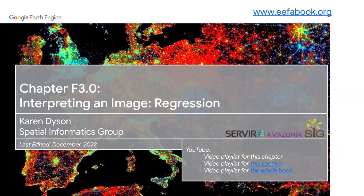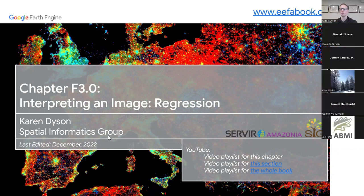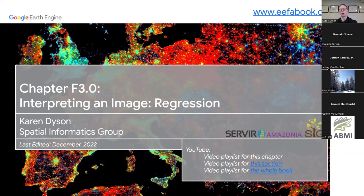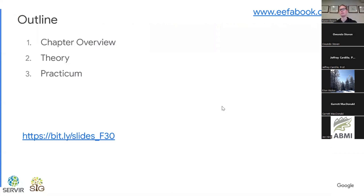Today we're going to talk about chapter F3.0, which is Interpreting an Image Regression. This chapter is pretty narrowly focused just on regression in the Google Earth Engine context. I'm not going to be talking about what regression is, how to do a regression, or the theoretical basis of regression too much. But we will do an overview of the chapter, some of the theory, and then dive into the practicum.